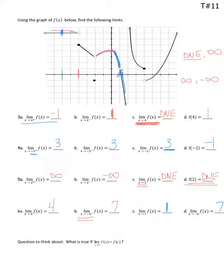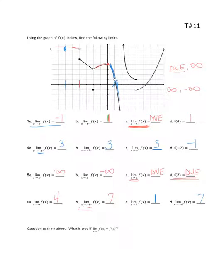Hopefully that helped you and you were able to get those correct. Now consider this question: notice that sometimes we got the limit and the function value to be different. So I'm asking you to consider what would be true if the limit equals the function value. Think about where that's true — look at that graph and see if you have a little guess.